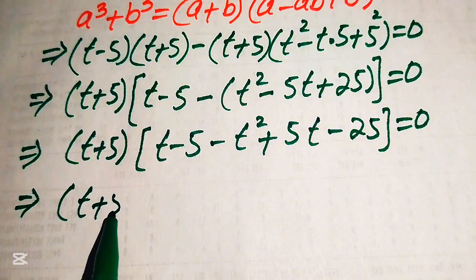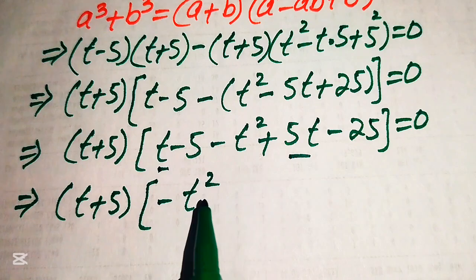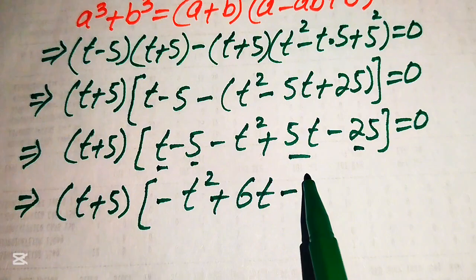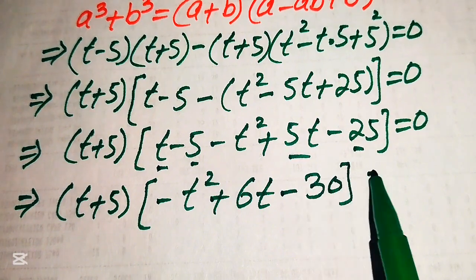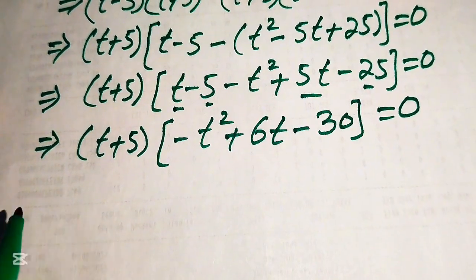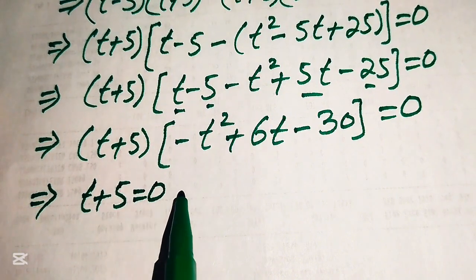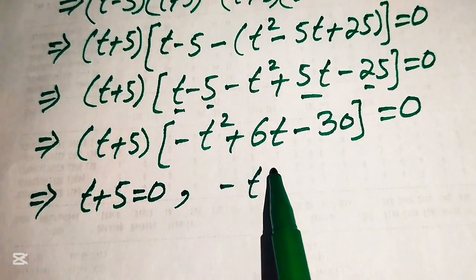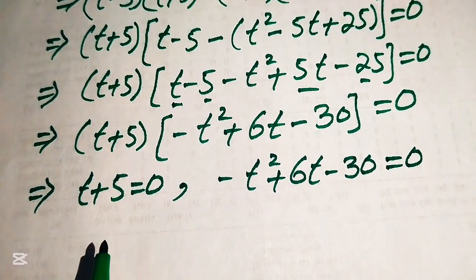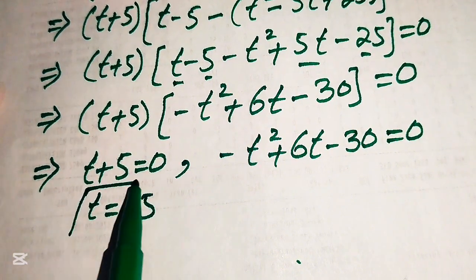Distributing the negative sign gives (t plus 5)(t minus 5 minus t squared plus 5t minus 25) equals 0. Simplifying the bracket: combining t and 5t gives 6t, and combining minus 5 and minus 25 gives minus 30, so we get (t plus 5)(minus t squared plus 6t minus 30) equals 0. Setting each factor to zero gives the two cases: t plus 5 equals 0, and minus t squared plus 6t minus 30 equals 0.